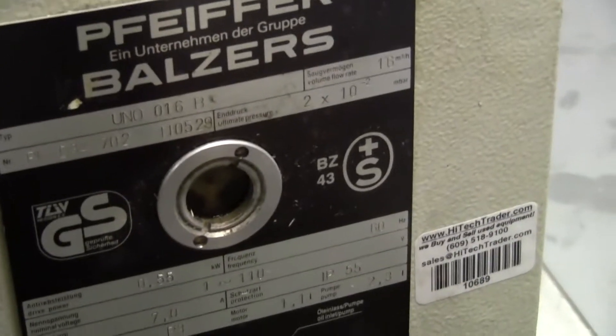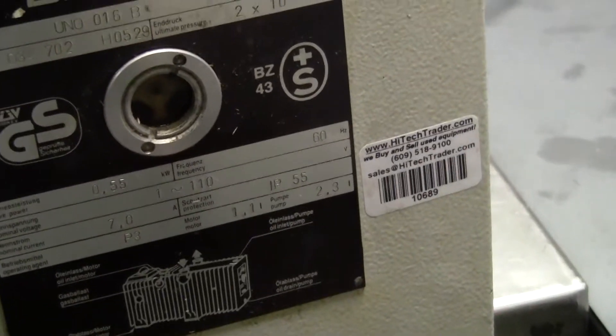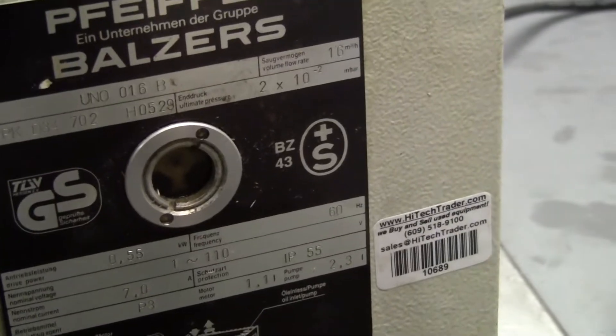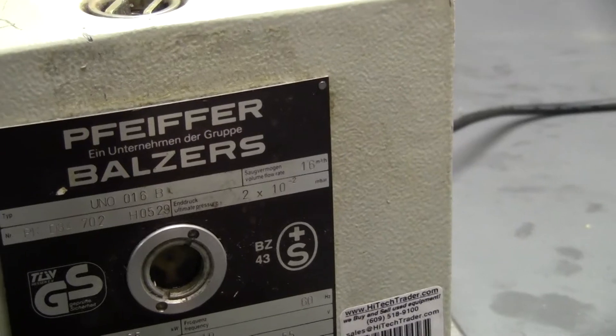The model number is UNO016B, B as in boy. Supposed to pull down 2 times 10 to the minus 2.